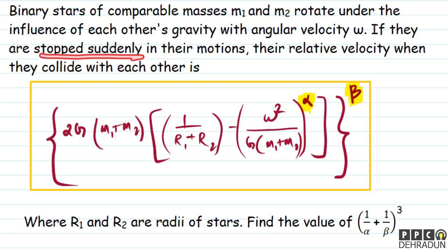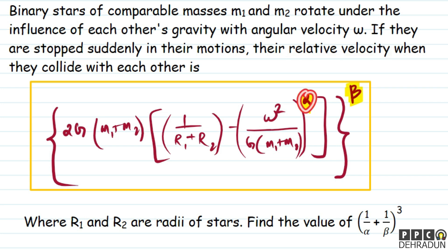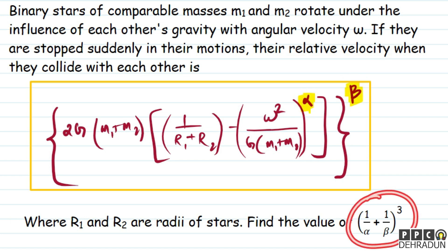Suddenly we have stopped the stars, so now the gravitational force will attract them toward each other, and at some time they will collide. That is the moment we need the relative velocity. We don't know it yet — we have to find it so we can solve this expression.